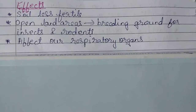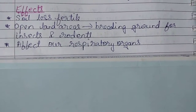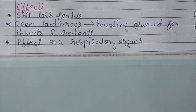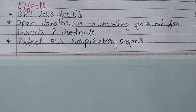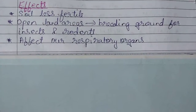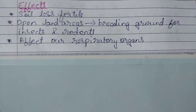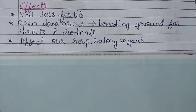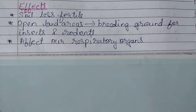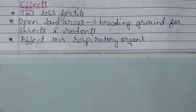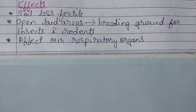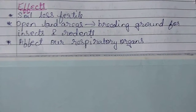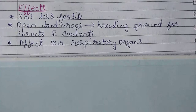Now let us see the effects of land pollution. Using harmful chemical fertilizers in fields will make the soil less fertile and the soil will be unfit for growing crops. So the use of chemical fertilizers is harmful — it makes the soil less fertile and the soil becomes unfit for growing crops.